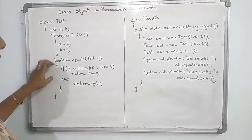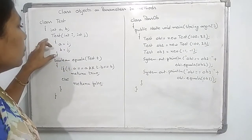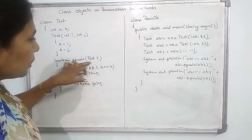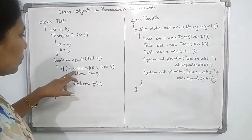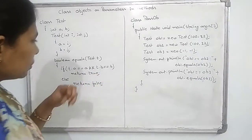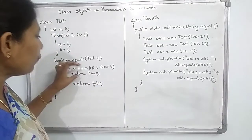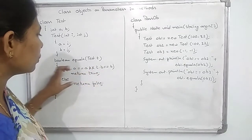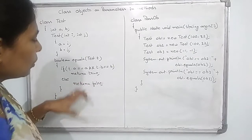Next, I am taking another method of Boolean type. The method signature is: boolean equals(Test T). So, I am creating an object of class Test called T and passing that object to the parameter of the method equals. If T.A equals A and T.B equals B, then return true. After passing the objects, if both values A and B are equal, it returns true; otherwise it returns false.